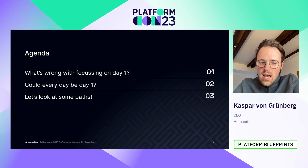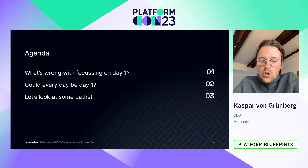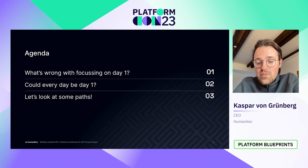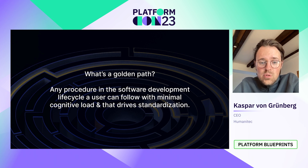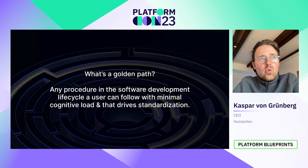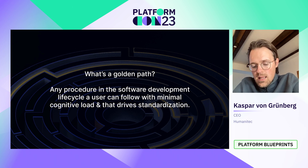Let's look at the agenda. First, I want to highlight what's wrong with focusing on day one — could every day be day one? Then we're going to revisit some paths. But before we do that, what is a golden path? A golden path is any procedure in the software development life cycle that a user can follow with minimal cognitive load that drives standardization.